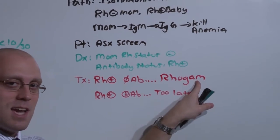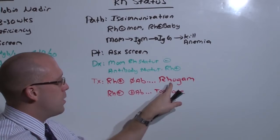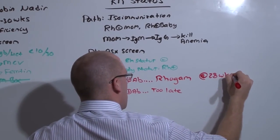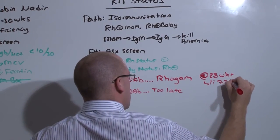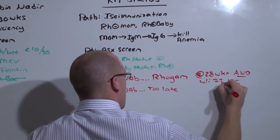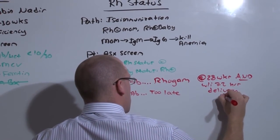So Rho gam is given at 28 weeks prophylactically and then within 72 hours of delivery or procedure.